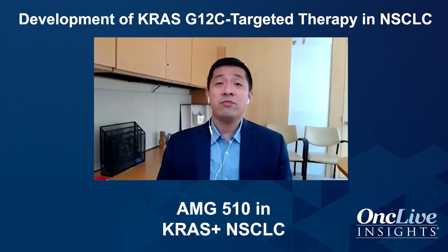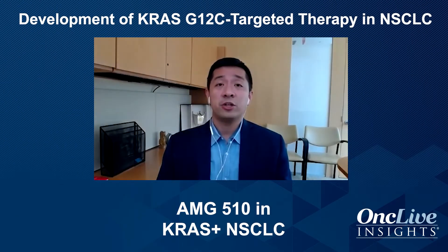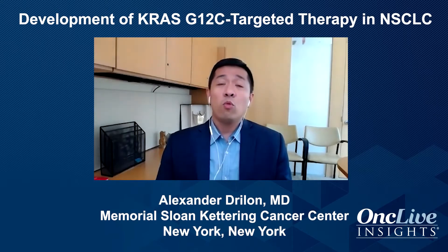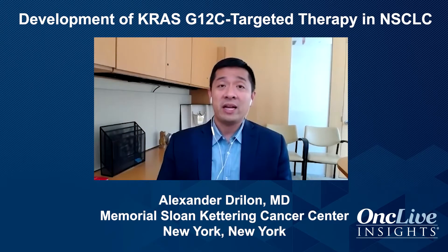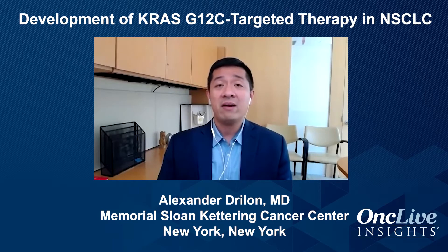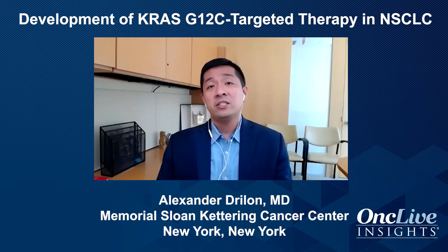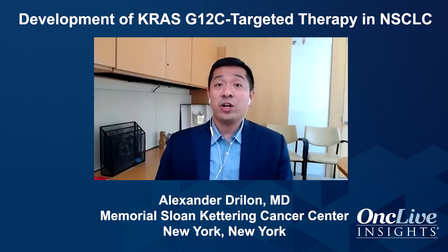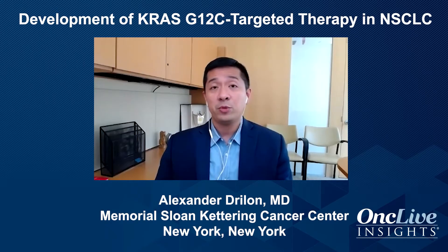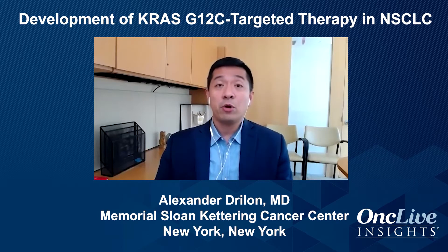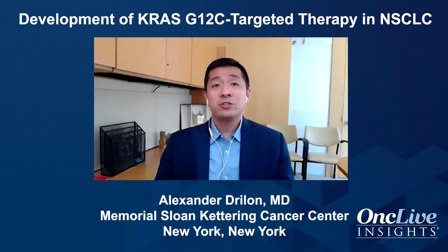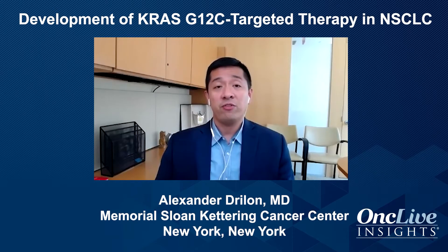We now have a variety of selective direct inhibitors of KRAS-G12C. As a reminder, it's a specific mutation you're looking for. One of these drugs is AMG510, now named Sotoracib, and it is in clinical trials for patients with G12C mutations — lung cancer patients and other cancers such as colorectal cancers. We've seen very good activity in KRAS-G12C mutant lung cancers, with response rates approaching 50%, which is a dramatic difference from older KRAS-targeting strategies. This drug has been very exciting for the field.